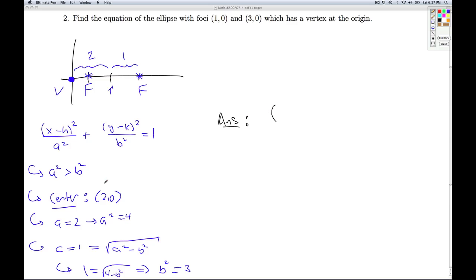Well, the center's at (2, 0). That means the h is 2 and the k is 0. So I have (x - 2)² / a squared, which is 4, plus (y - k), in this case 0 squared, over b squared, which is 3, equals 1. And then I can simplify and get my final answer. So that'll do it for number 2.